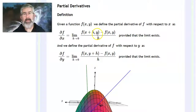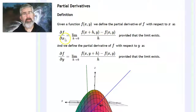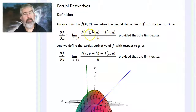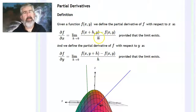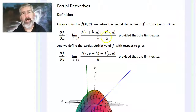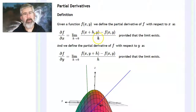Something to notice: y is not changing — the y in both terms is the same. This is the partial with respect to x because you're just changing the x variable. It looks exactly like the derivative definition from Calc 1, but with this comma-y carried along — it's just in the x direction.